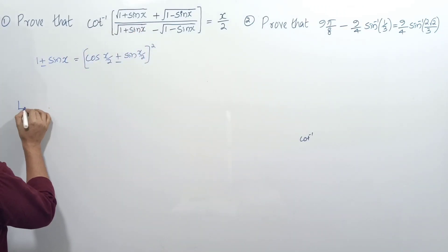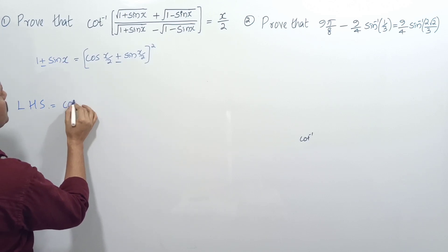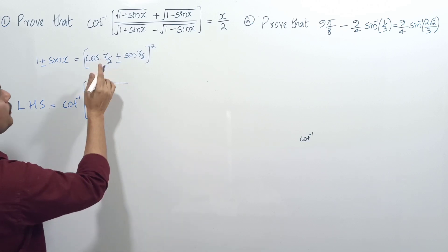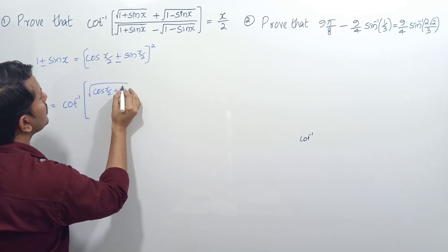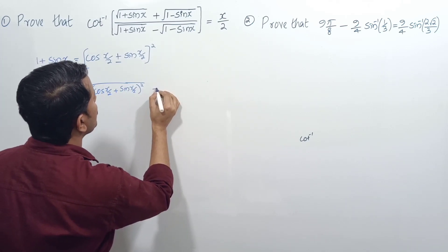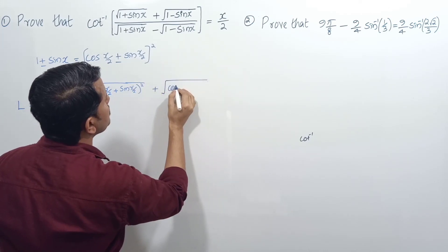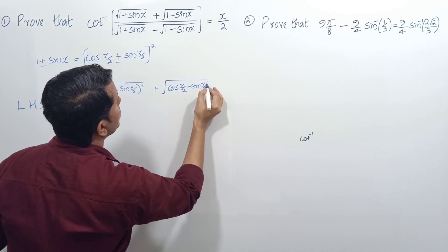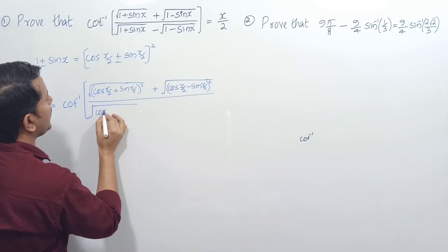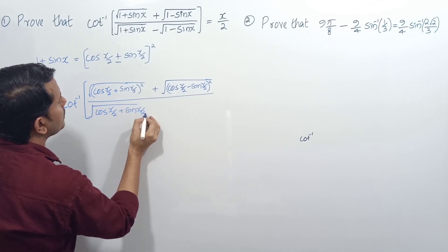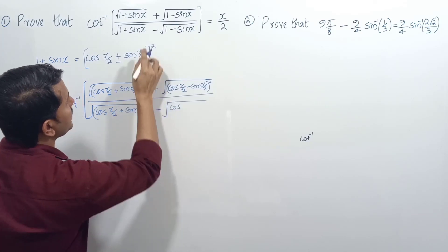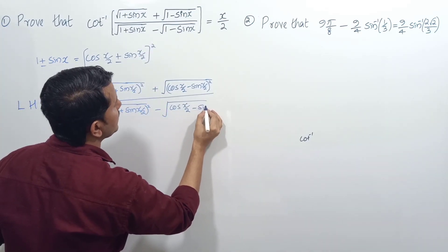The LHS will become cot inverse of: the numerator has √((cos(x/2)+sin(x/2))²) + √((cos(x/2)-sin(x/2))²), divided by √((cos(x/2)+sin(x/2))²) minus √((cos(x/2)-sin(x/2))²). The square root and square will vanish in the next step.